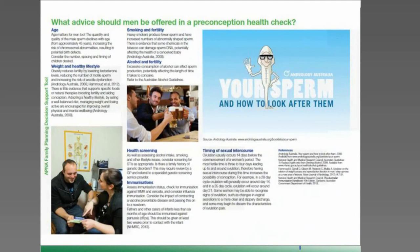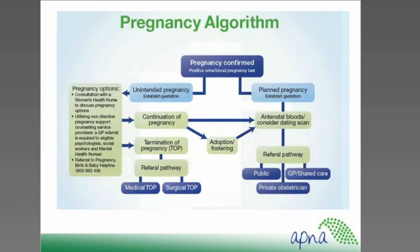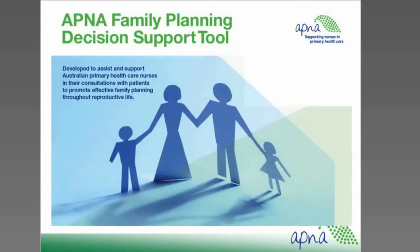Health practitioners in general practice and other primary health care settings have a key role to play in addressing this issue and are in an ideal position to provide contemporary care, advice and education. Managing adolescent fertility is a particular concern. Australia's teenage pregnancy rates are higher than many other developed countries. Pregnant young women are at increased risk of low birth weight babies, mental health issues and long-term social hardships. Primary health care nurses are in a position to identify young women at risk of pregnancy and implement strategies to help them make informed choices.